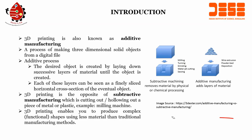3D printing is opposite to subtractive manufacturing. Examples of subtractive manufacturing include machining processes like milling, turning, grinding, and water jet cutting. The milling machine is an example for subtractive manufacturing, while 3D printing enables us to produce complex functional shapes using less material than traditional manufacturing.